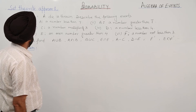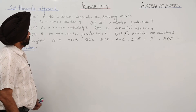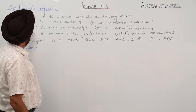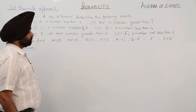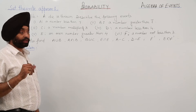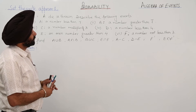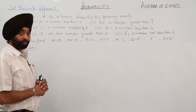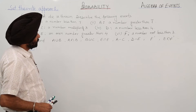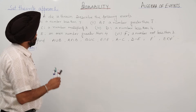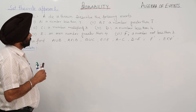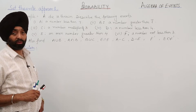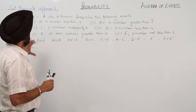A very simple example: a die is thrown. Describe the following events. Event A is a number less than 7. Event B is a number greater than 7. Event C is a number multiple of 3. Event D is a number less than 4. Event E is an even number greater than 4. Event F is a number not less than 3.